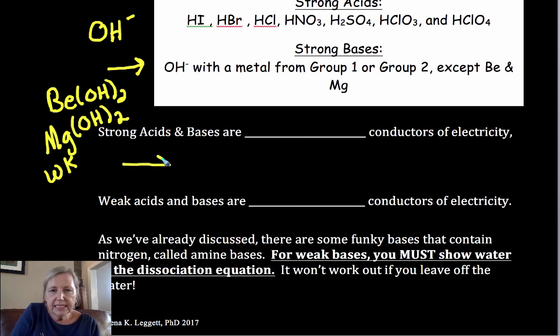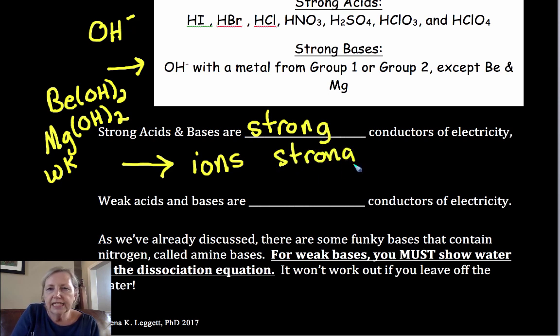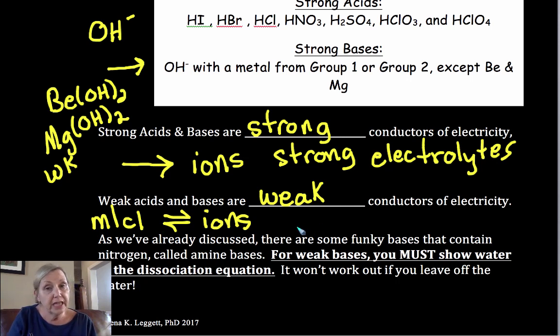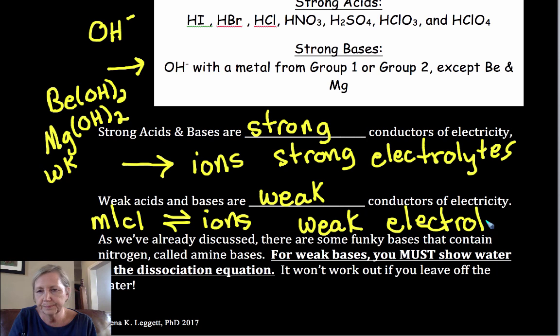Strong acids and bases, since they go 100% to make ions, they are strong conductors of electricity. We would call them strong electrolytes. Weak acids and bases are weak conductors. That's because they stay in their molecular form, at least part. So they don't go 100% to form ions. Some stay in the molecular part. You need the ions to facilitate flow of electrons. So these are considered weak electrolytes in terms of having a weak ability to conduct electricity in their aqueous solutions.